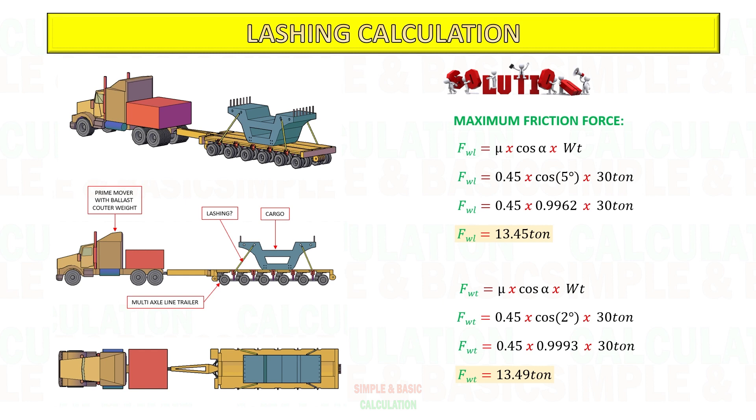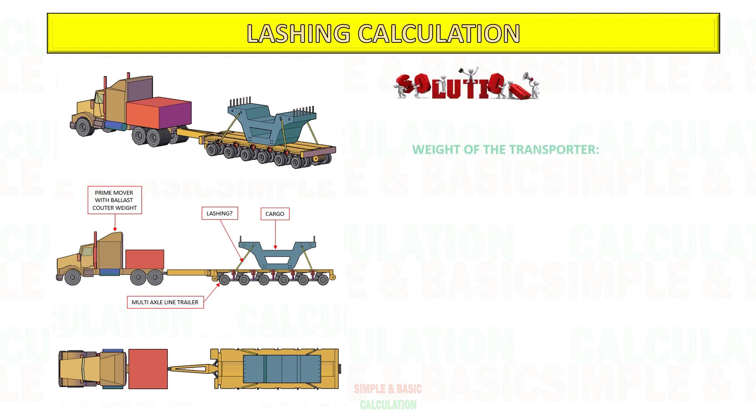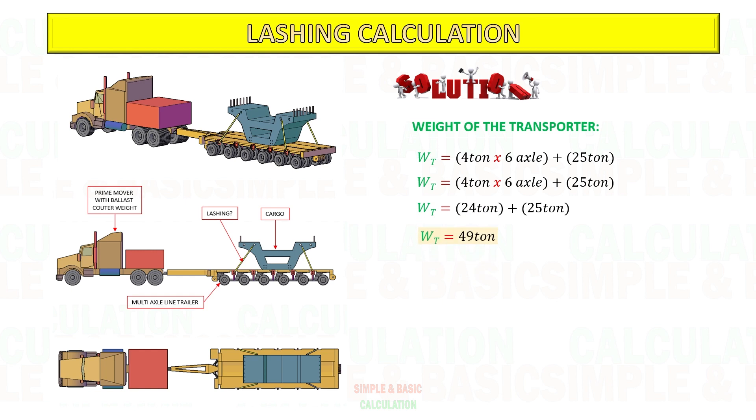Next, calculate the total weight of transporter: number of axle line multiply by weight per axle line, and add the prime mover weight with ballast counterweight.